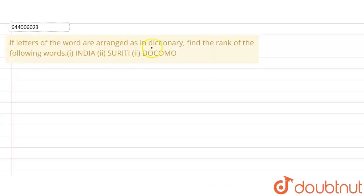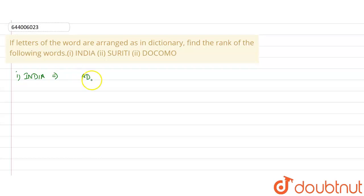We have a question: if the letters of the words are arranged in dictionary order, find the rank of the word. The first word given is INDIA. According to alphabetic order, we can write it as A, A, D, I, I, N.